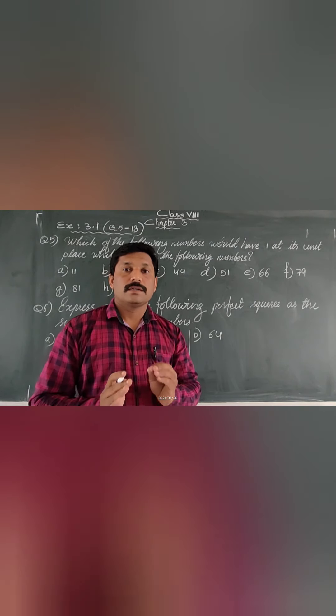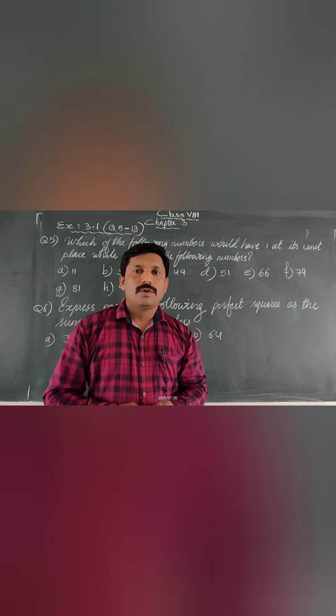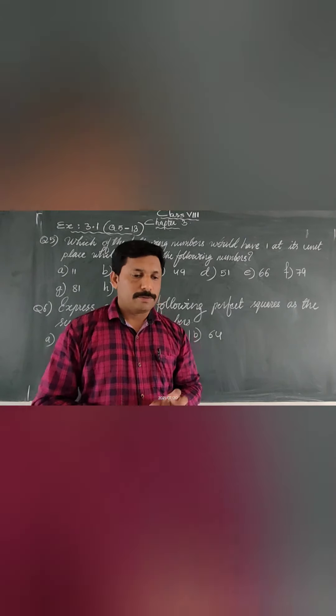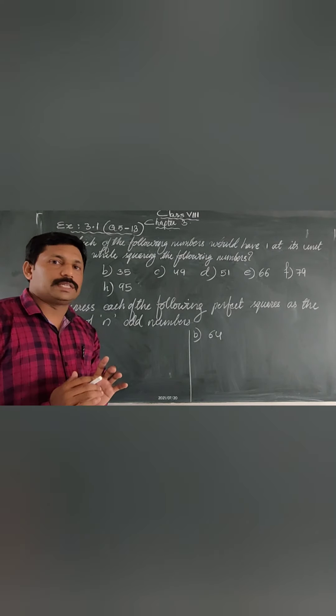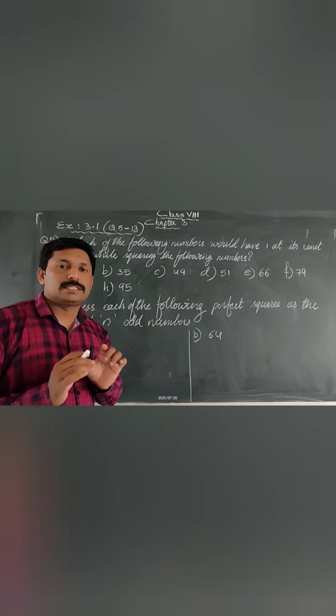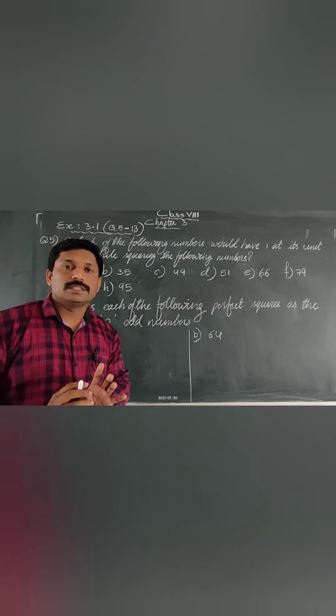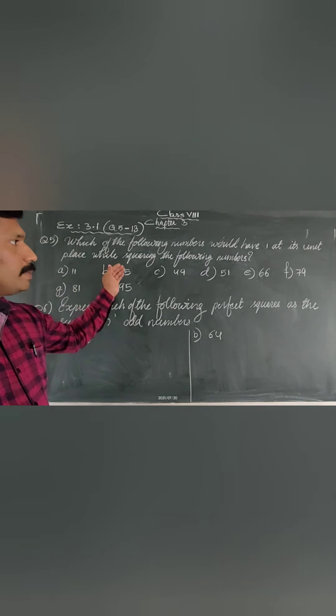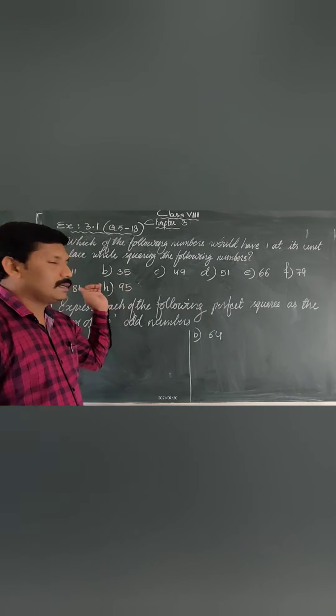Today we are solving the remaining questions of Exercise 3.1. In our last class we completed up to the fourth question, and today from the fifth question onwards we are going to solve. Look at the fifth question: which of the following numbers would have 1 at its units place while squaring? That means when we square these numbers, which ones have 1 as the units place?